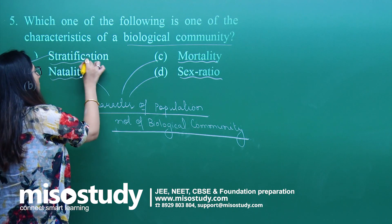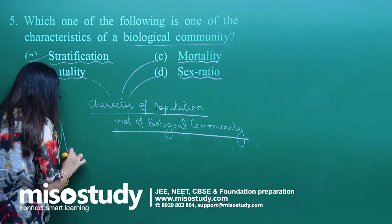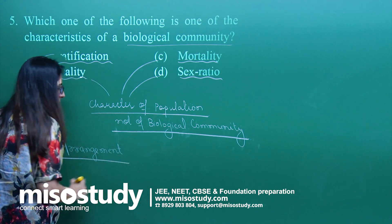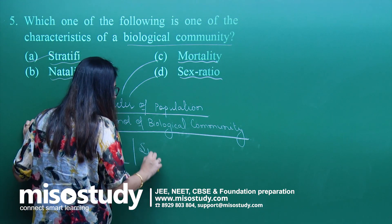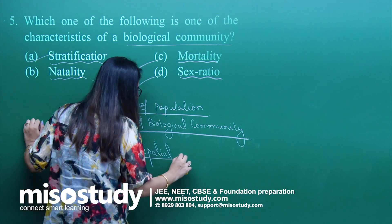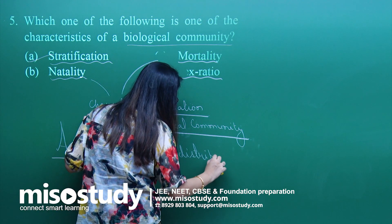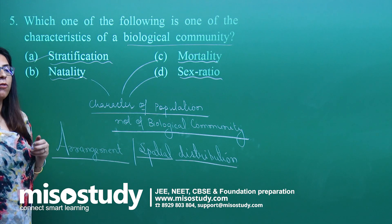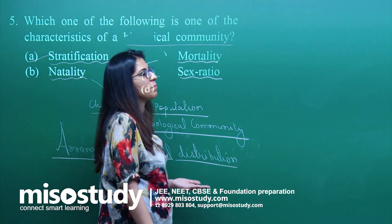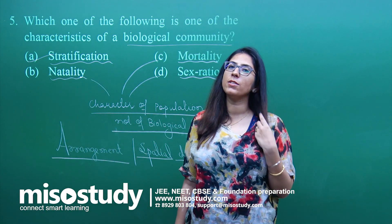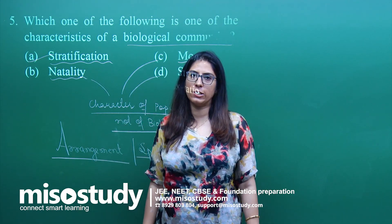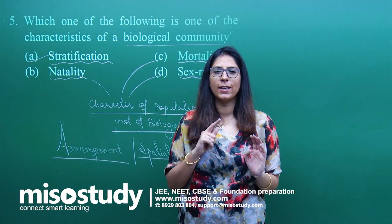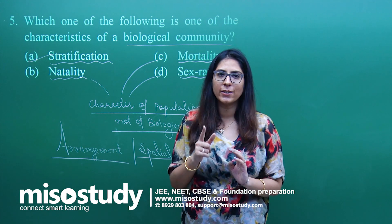Let us talk about stratification. The another name of stratification is arrangement, or more precisely, spatial distribution. Every species has a particular requirement for their resources, and depending upon them, they show a spatial distribution. That is a characteristic of a biological community. So I will go for option A — stratification. This was again a very easy but a bit tricky question, to make you realize that you have to look at your theory part seriously.